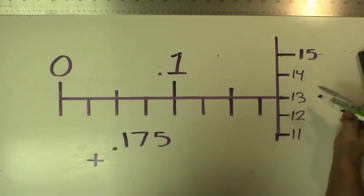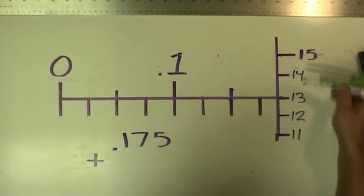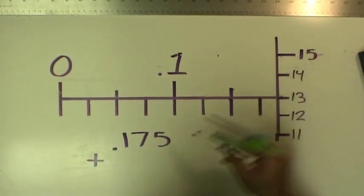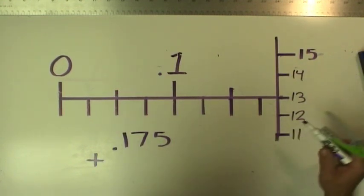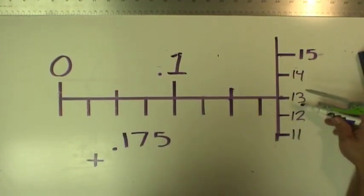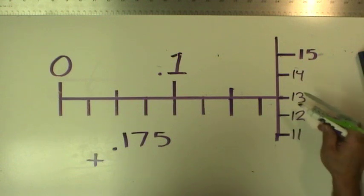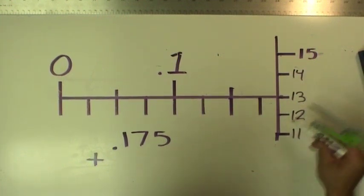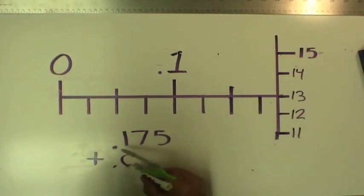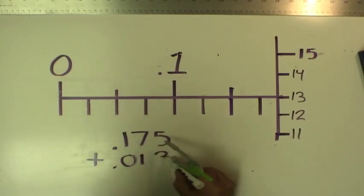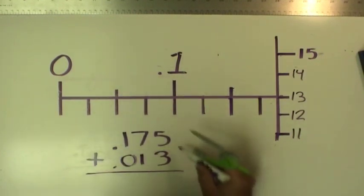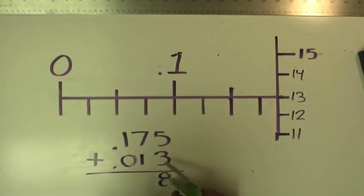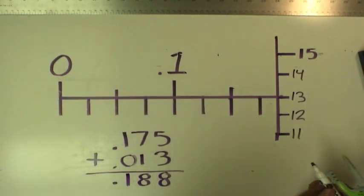And we're not close to the zero mark on the thimble scale. So we know that this is 0.175 and we add this many thousandths of an inch. So this is 0.013 that we'll add. And this is 8 and 8 and 1, so 0.188 inches. That's the reading on this micrometer.